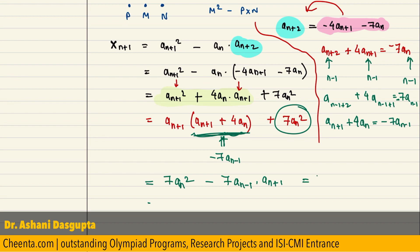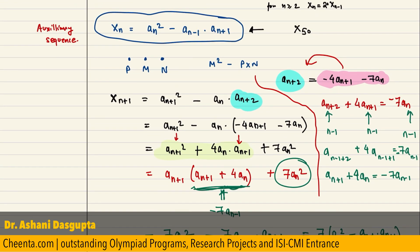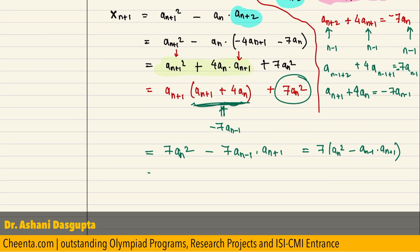Let us take 7 common, an square minus a(n-1) times a(n+1), which is xn, 7 times xn. This is fantastic because what we found is that x(n+1) is equal to 7 times xn.